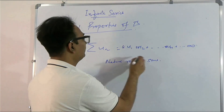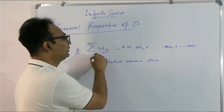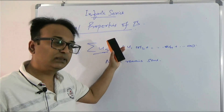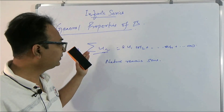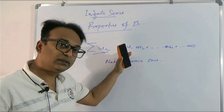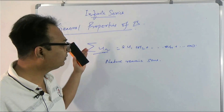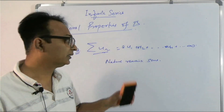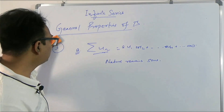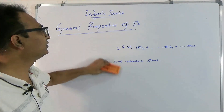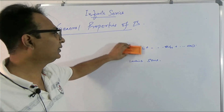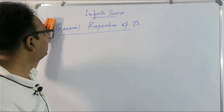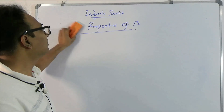If the series was convergent, it still remains convergent. If it was divergent, it still remains divergent. If it was oscillatory in nature, it still remains oscillatory. So these are the three general properties of infinite series which you must understand and remember.